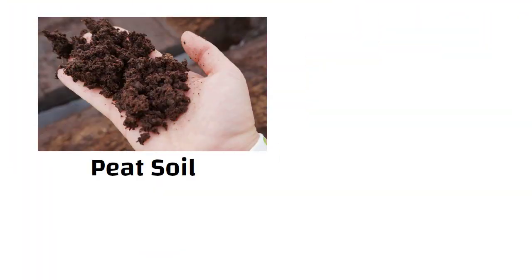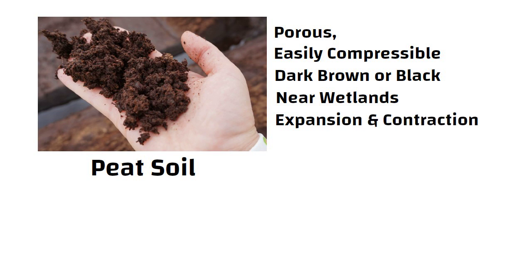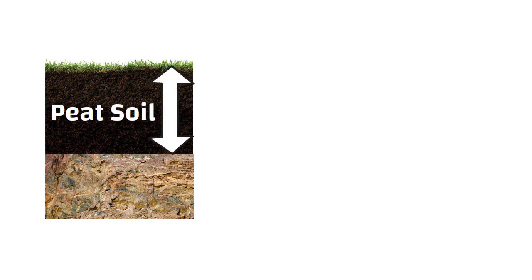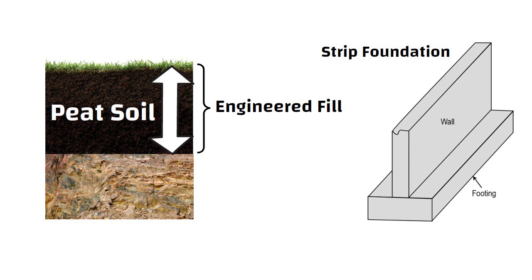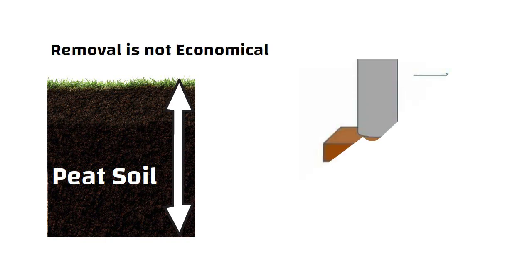Peat soil is considerably porous, easily compressible, and dark brown or black colored soil, which is commonly present near wetlands. It undergoes expansion and shrinkage due to moisture fluctuation and is extremely weak in terms of load carrying capacity. In some cases, when the peat layer is at shallow depth, it can be removed up to strong strata and replaced with engineered fills, and strip foundation can be used here. If the thickness of peat soil is great and its removal is not economical, then pile foundation should be selected.